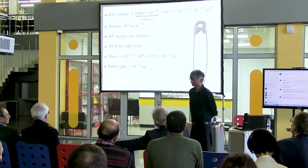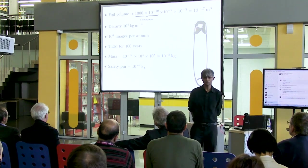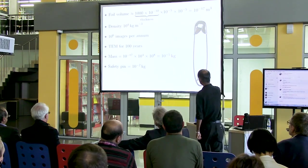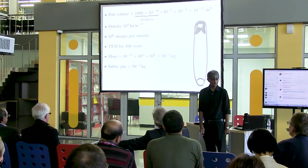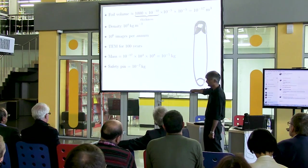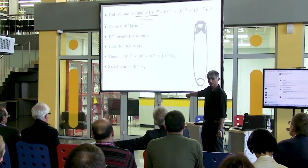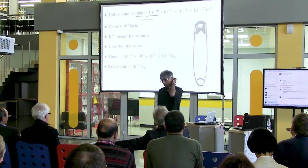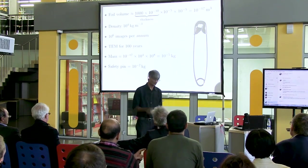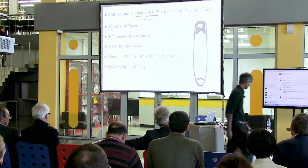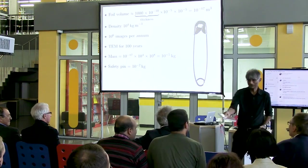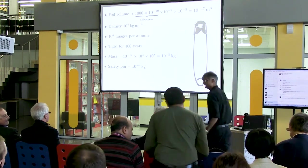Давайте проведём небольшие вычисления. Наша фольга: 100 нанометров толщиной, 10 мкм × 10 мкм — обычно берётся такая площадь. Объём фольги — 10⁻¹⁷ м³. Допустим плотность материала 10⁴ кг/м³, 1 миллион изображений в год, и ПЭМ существует 100 лет. Общий объём материала, изученного при помощи ПЭМ, — это 10⁻³ килограмма. Вес булавки — 10⁻² кг. Как же потом можно утверждать, что исследования при помощи ПЭМ позволяют построить такой мост? Тот, кто сказал 100 граммов — ваш ответ наиболее близкий к правильному.